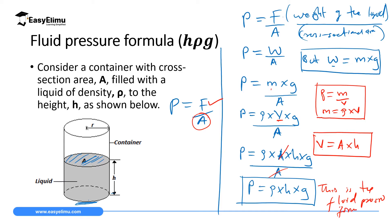The fluid pressure formula does not depend on the area of the container. If you know the density of the liquid, the height of the liquid in the container, and the gravitational constant, you can calculate the pressure. The factors affecting pressure in liquids come directly from the formula: density, height, and the gravitational constant — just as the factors for pressure in solids came from force and area.